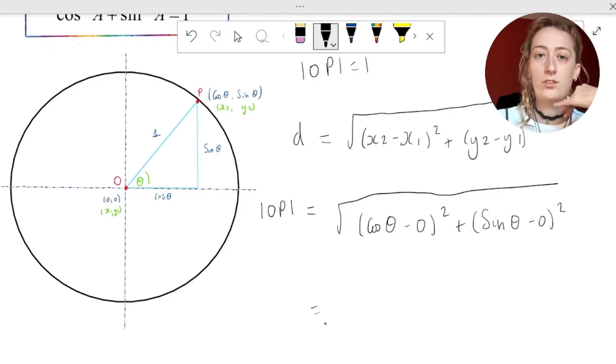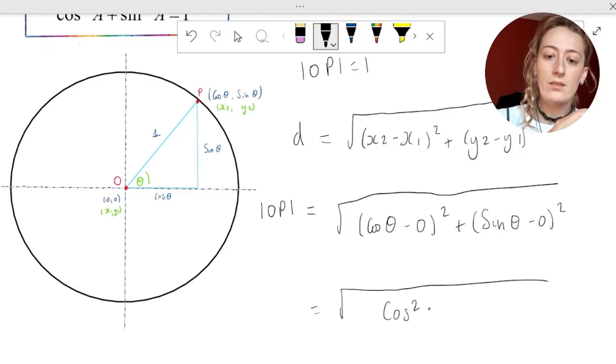Now, cos theta minus zero is just cos theta, sine theta minus zero, just sine theta. So we can simplify this. So this is equal to cos squared theta plus sine squared theta.